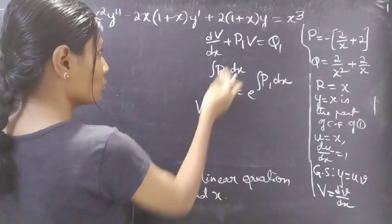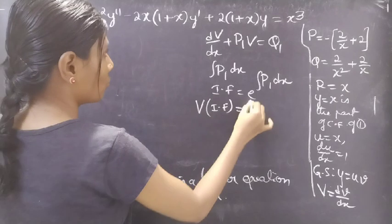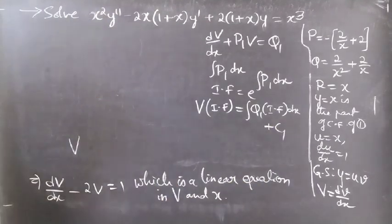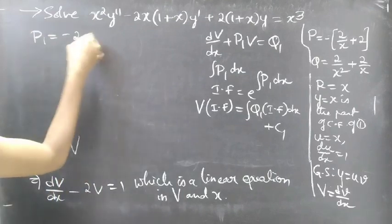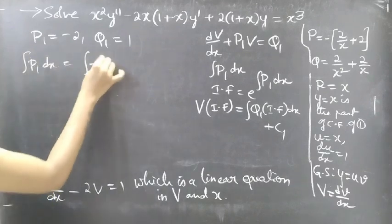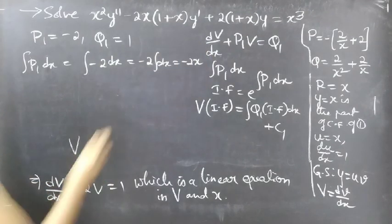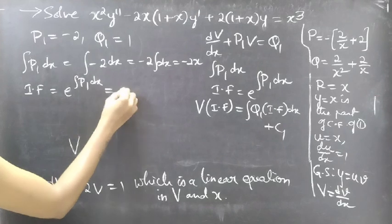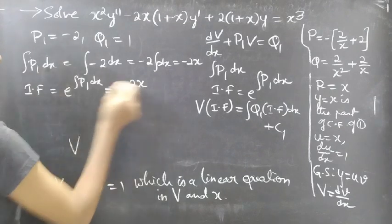The general solution is given by: V times integrating factor equal to integral of Q1 times integrating factor times dx plus c1. Comparing the two equations, we get P1 equal to minus 2 and Q1 equal to 1. Now let's find integral of P1 dx: this is equal to integral of minus 2 dx, which is equal to minus 2x. Then the integrating factor is e to the power of integral P1 dx, which is equal to e to the power minus 2x. So our integrating factor is e to the power minus 2x.